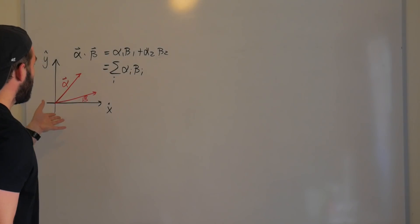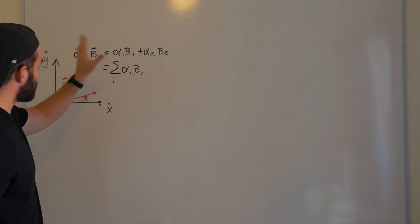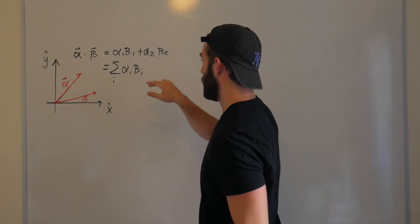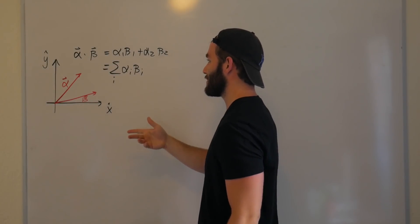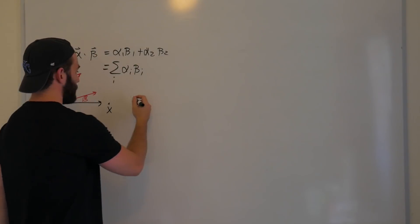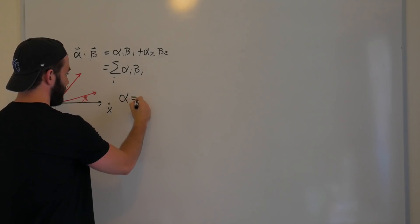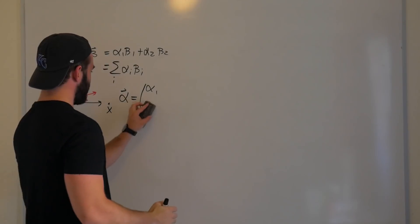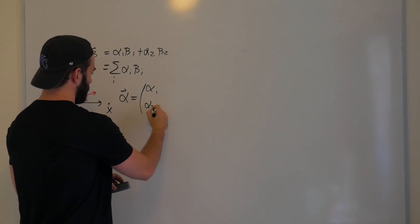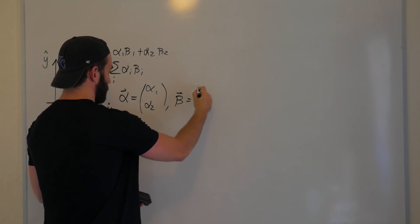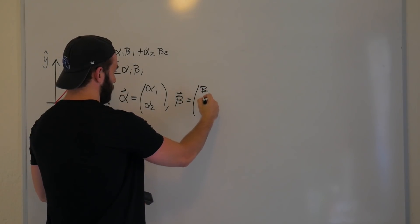Not blowing any minds here. In quantum mechanics, it's really common to express vectors not in this way, but more so in terms of column and row vectors. So we're going to see how the definition of the dot product changes when we switch to that notation. So let's go ahead and rewrite our vector alpha in terms of a column vector: alpha_1, alpha_2. And then we're going to do the same thing for beta. Beta is equal to a column vector, beta_1, beta_2.